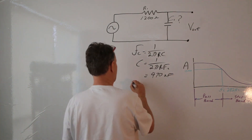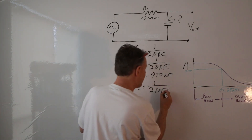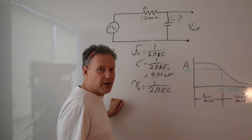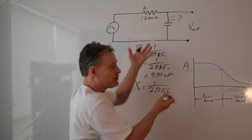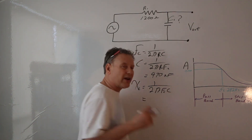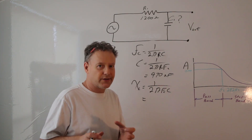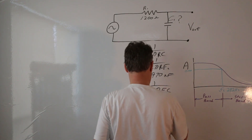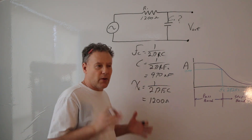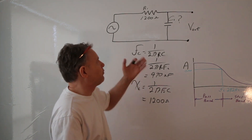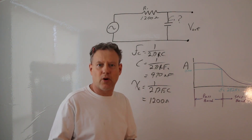The formula for reactance is Xc = 1 / (2π × f × C). In this case I'm putting in the corner frequency because I want to know the reactance at the corner frequency, where the gain will be 0.707. When I calculate this, I actually don't even need to — because at the corner frequency the reactance equals the resistance. So I just write down 1200 ohms.